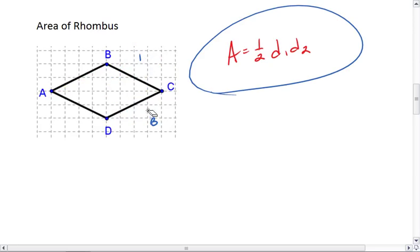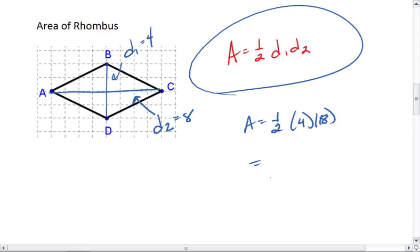For this particular situation, D1 is 4. D2 is 1, 2, 3, 4, 5, 6, 7, 8. So the area is 1/2 times 4 times 8, which equals 16 units squared.